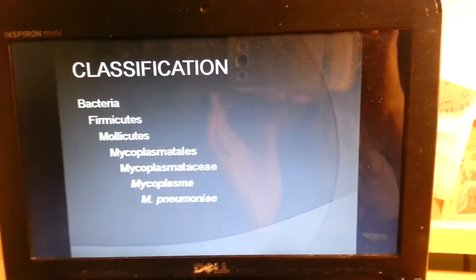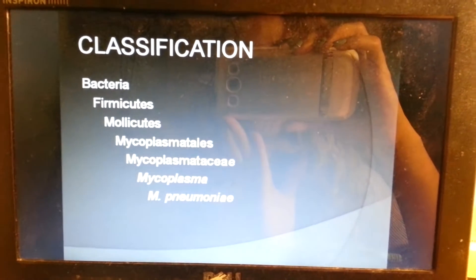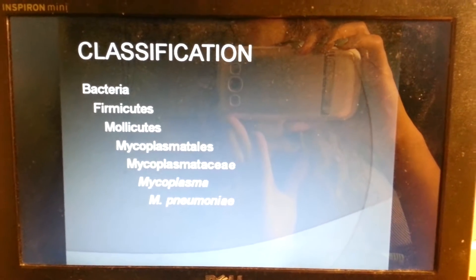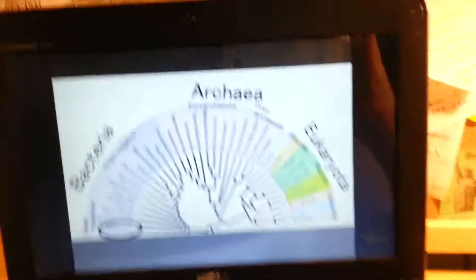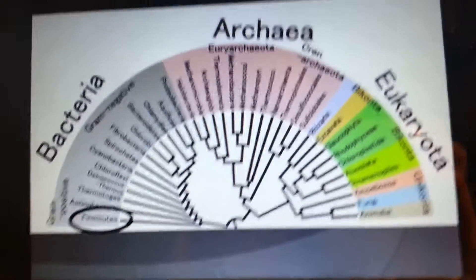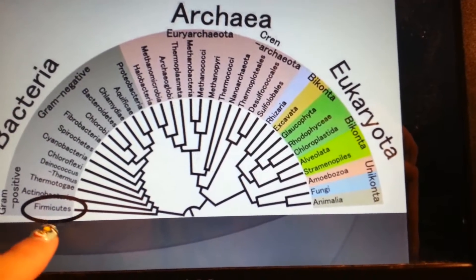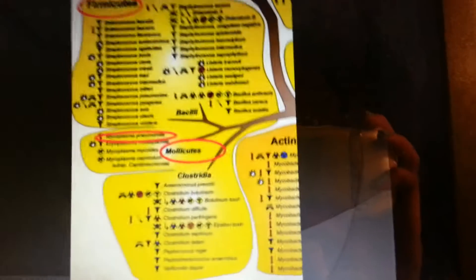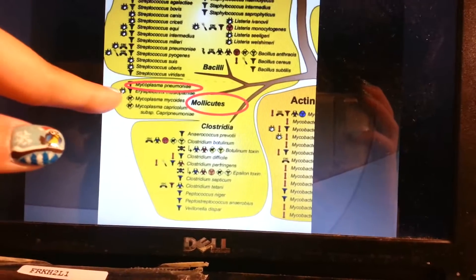Classification. The classification of Mycoplasma pneumoniae is: Bacteria, Firmicutes, Mollicutes, Mycoplasmatales, Mycoplasmataceae, Mycoplasma, and finally Mycoplasma pneumoniae. In the phylogenetic tree, you'll see it's Bacteria, Firmicutes, down to Mollicutes — Mycoplasma pneumoniae falls right there, which I believe is represented by a medical symbol.